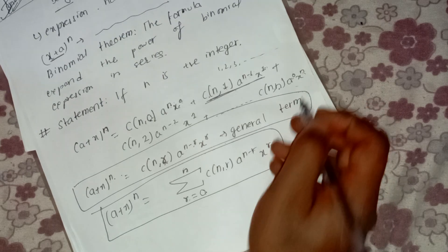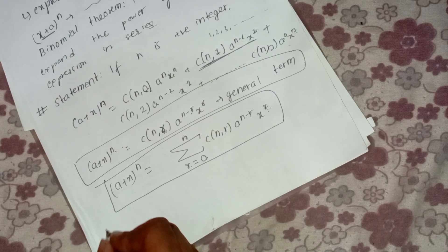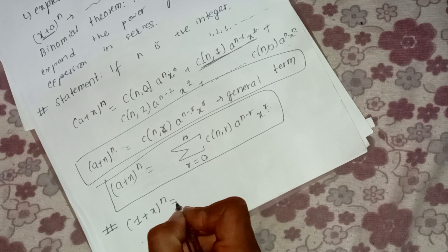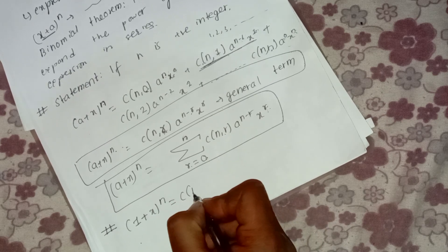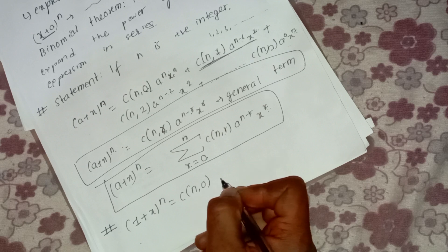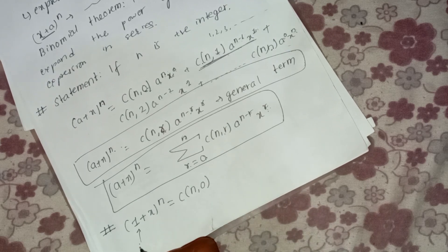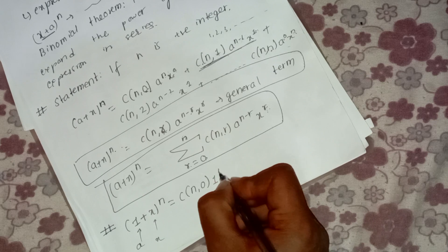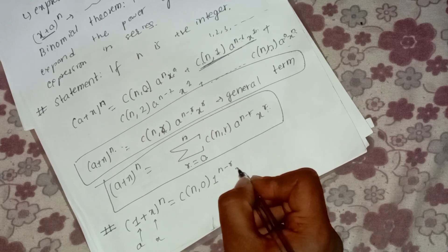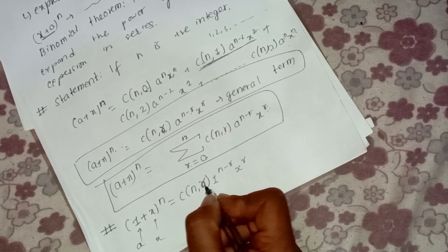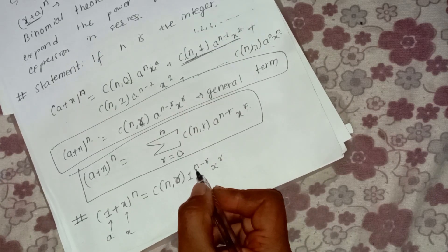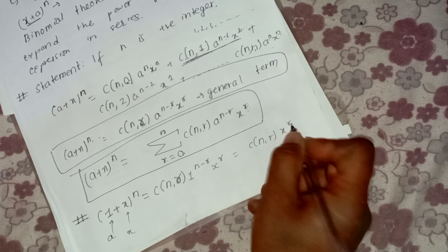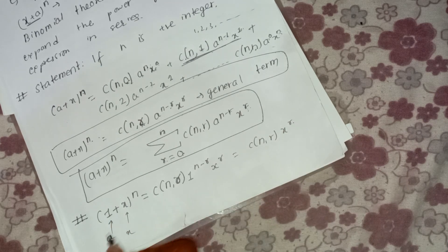We can write the general term as: C(n, r) times a to the power (n minus r) times x to the power r. So for (a + x)^n, we write c(n, 0) and 1 to power (n minus r), and from that we can write a plus x. The power of n is equal to the sum.